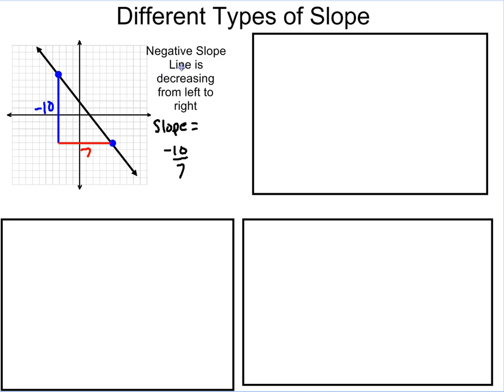The first type of slope that you're going to see are negative slopes. And this is where the line is decreasing from left to right. We're always looking at the graph from left to right. So this point right there is my leftmost point. So from there, to get to this point, I've got to go down 10. So in this case, that's why it's a negative 10. And then from there, I'm going to run 7. That's why it's a positive 7.